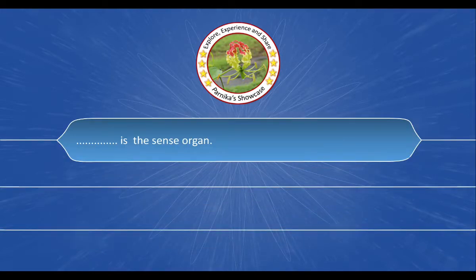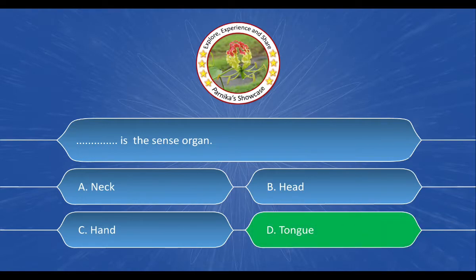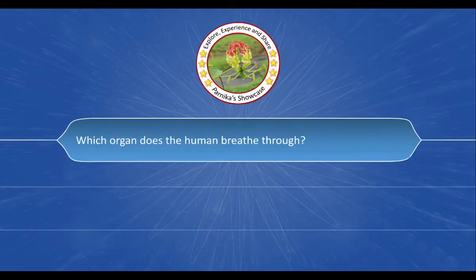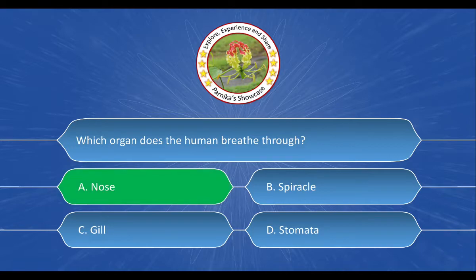Next question: which organ does the human breathe through? The options are: a) nose, b) spiracle, c) gill, d) stomata. The correct answer is option a) nose.